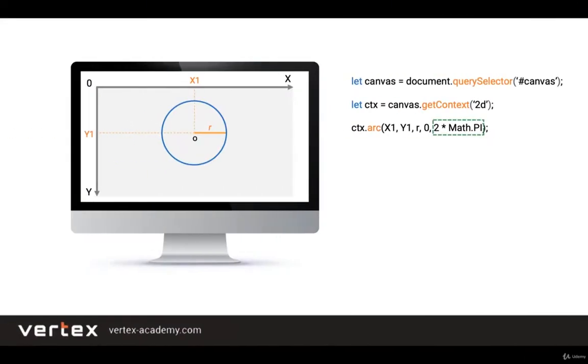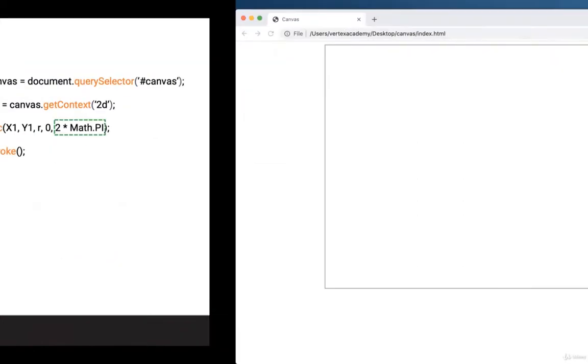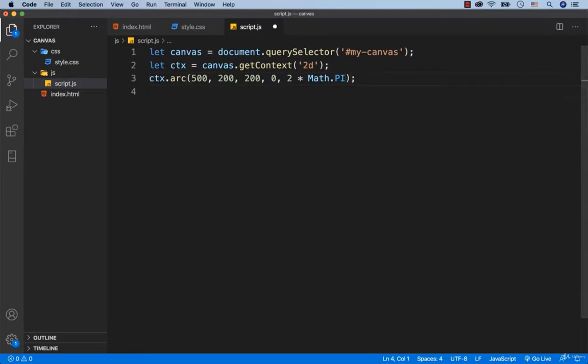Save and refresh the page. And... we don't see the circle. Why is that? Because we drew a virtual circle. To place this line on the canvas we need to use a function called stroke. Well, absolutely the same approach as we applied when we worked with the lines and rectangles. So we add ctx.stroke.